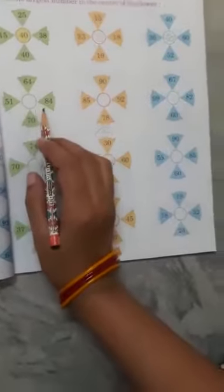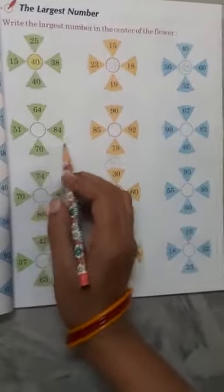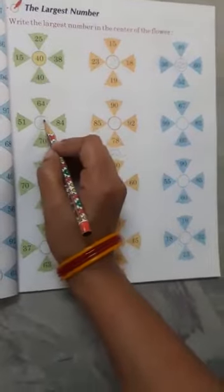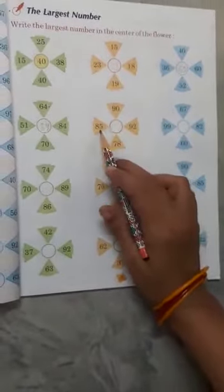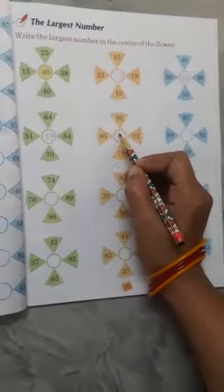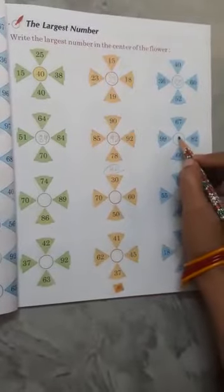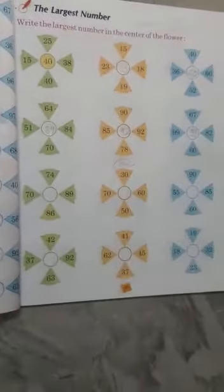90, 92, 78, 85 - 92. 67, 82, 60, 99 - 99 is the largest number. You will do this as homework, okay students.